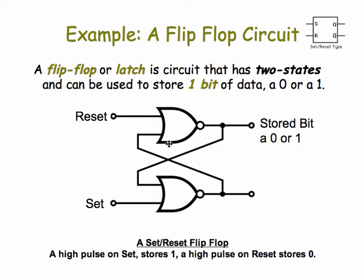This is an example of a flip-flop or a latch. It's a circuit that has two states, and the states represent one bit of data, either a zero or a one. And the way it works is this.